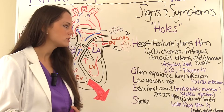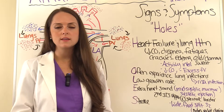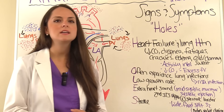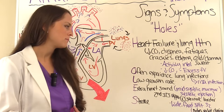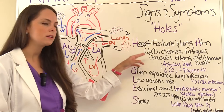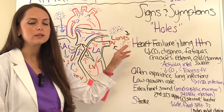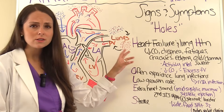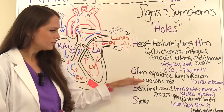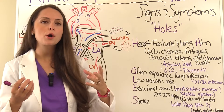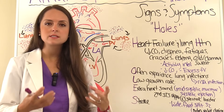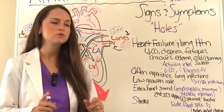O stands for often experiences lung infections — that's from the congestion in the lungs, making it a perfect environment for infection. Think nursing diagnosis: risk for infection. L stands for low growth rate, which traces back to inability to feed properly. They are tired and exhausted, their heart isn't working the way it should, they have breathing issues, and their body requires more calories for the heart to pump and for breathing, so they're burning more than they're taking in.